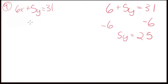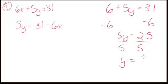subtract 6x, because we want to get 5y by itself. So 5y equals, now when I subtract 6x from this side, I'm not going to combine it and make it 25 or something, they're not like terms. It's just going to be 31 minus 6x, and I would divide by 5 here, and y would equal 5. Over here, we do the same thing,